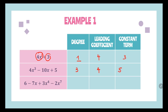For 6 minus 7x plus 3x to the power of 4 minus 2x to the power of 7, the highest power is 7, so this is a polynomial with degree 7. The leading coefficient is negative 2, which multiplies the highest degree, and the constant term is 6. I hope you can understand degree, leading coefficient, and constant term.